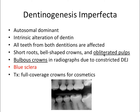Next we have dentinogenesis imperfecta, which is also really important. This one involves an intrinsic alteration of dentin — it doesn't impact the enamel at all. Again, all teeth from both dentitions are affected. We see short roots and bell-shaped crowns. The crowns appear bulbous on radiographs because of a constricted dentino-enamel junction, or DEJ — the rest of the tooth is very constricted because the dentin is affected. Also, the pulps are obliterated, and it's very hard to trace radiographically where the root canal and pulp chamber are.